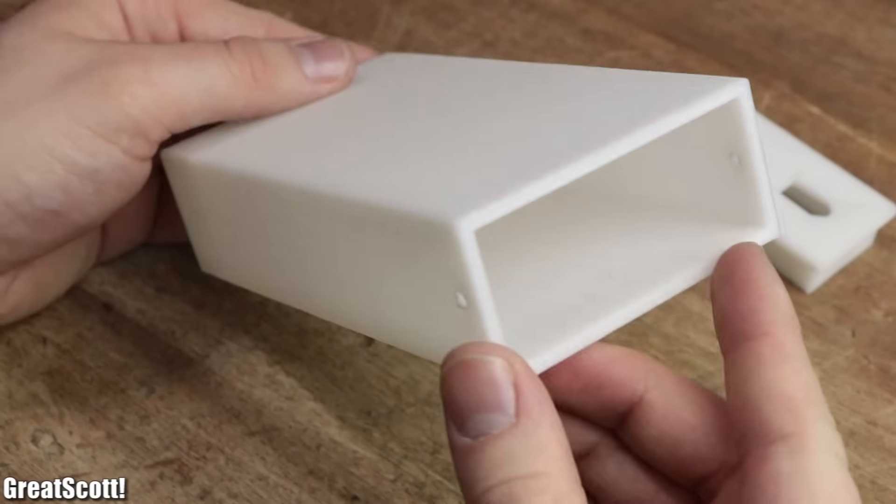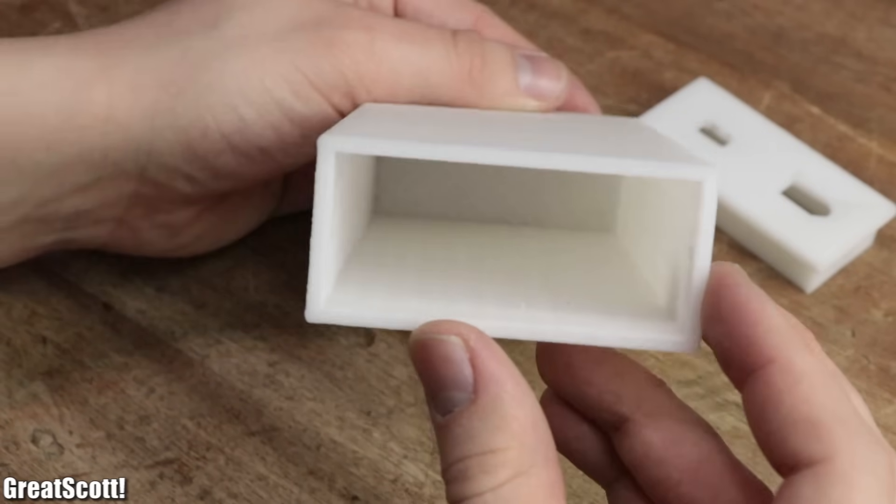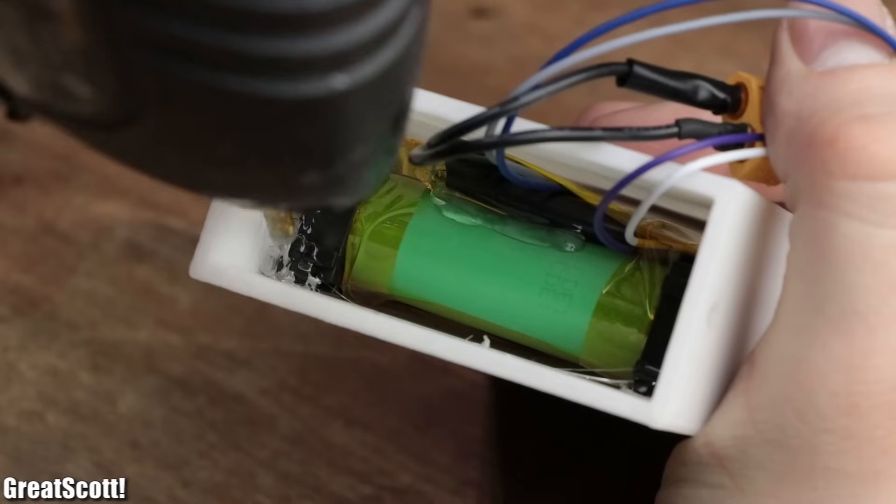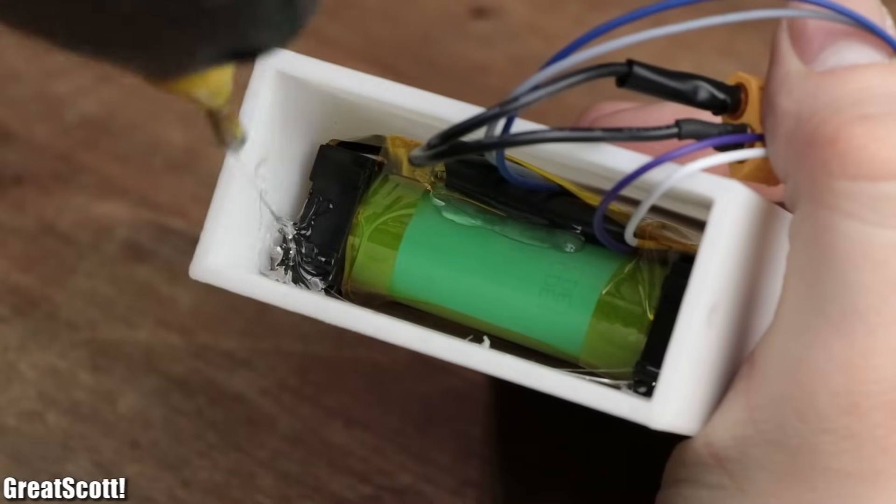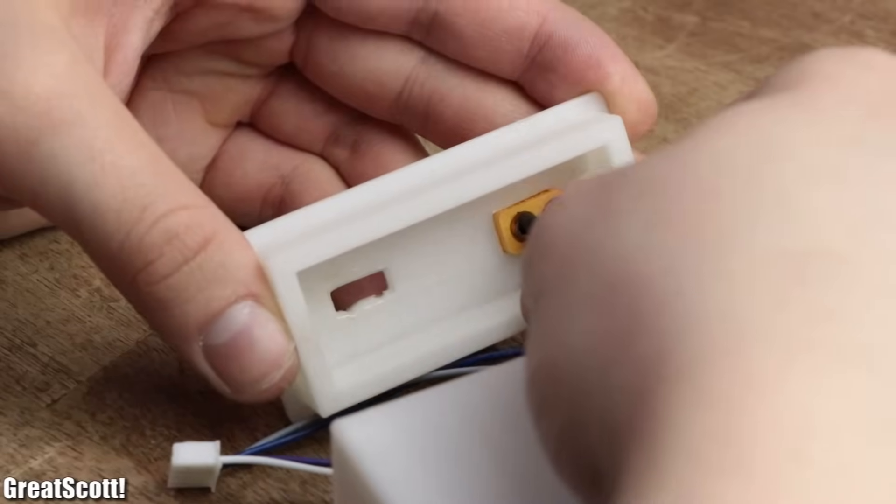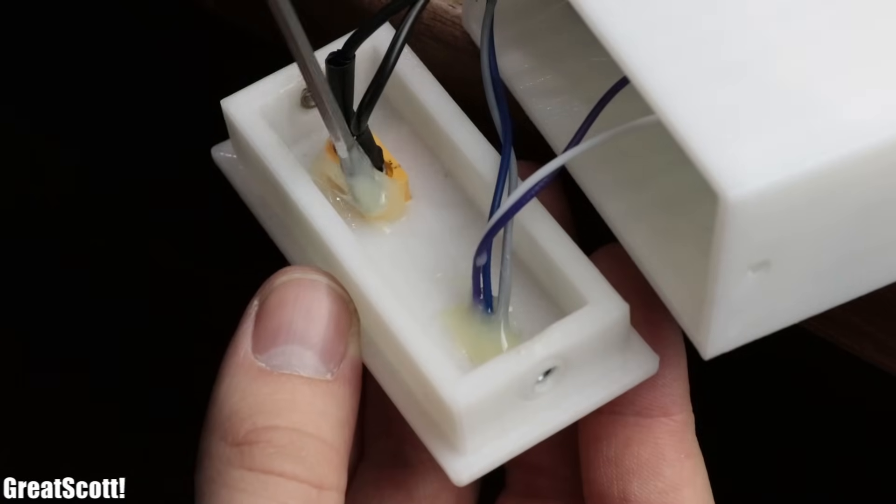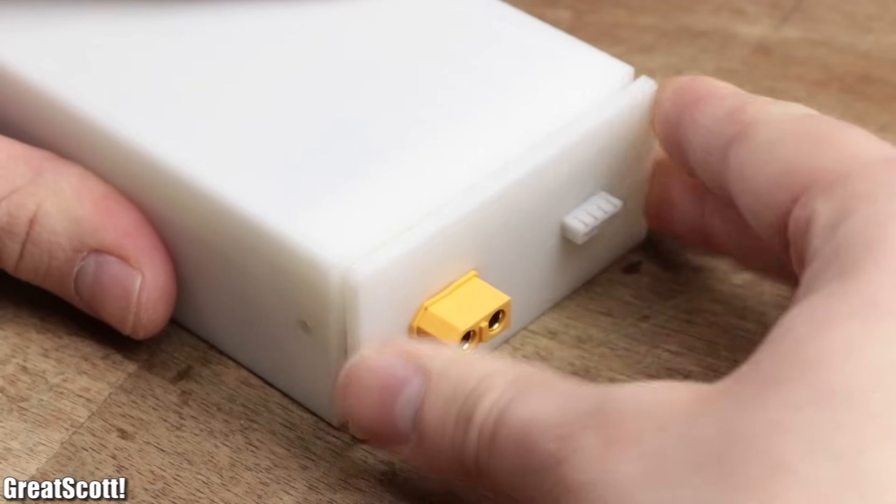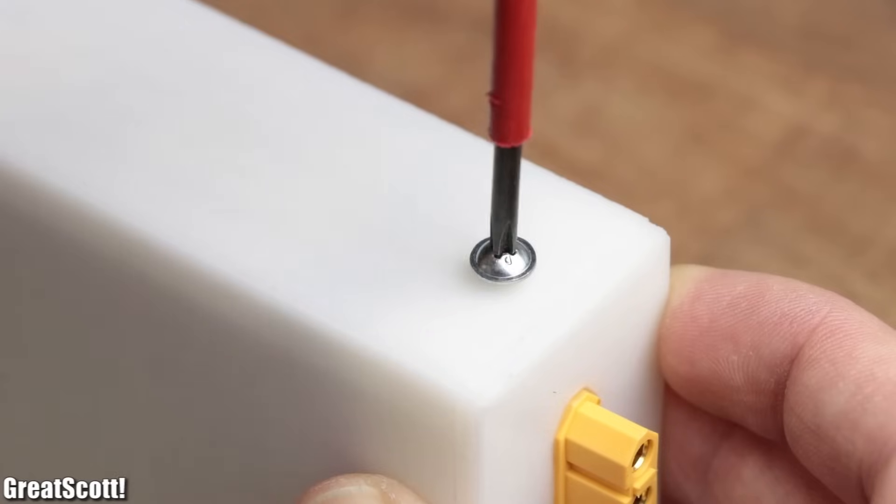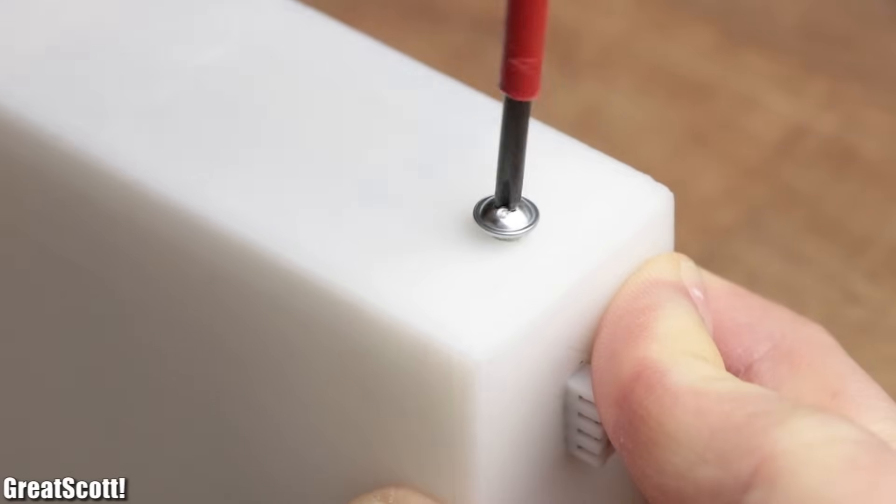After six hours the print was complete and I slid the battery pack inside it, secured it with a drop of hot glue, mounted the XT60 connector and balance connector with two component adhesive to the lid of the pack. And once that was dry I pushed it in place and secured it with two M3 bolts and two nuts which I placed inside the lid beforehand.